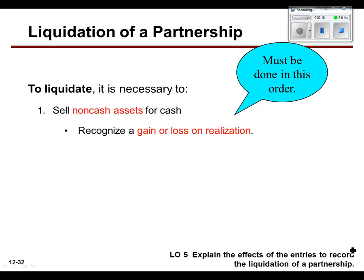First, you've got to get all of your non-cash assets into cash. You're going to sell all your extra inventory, sell all your equipment, maybe bargain with the insurance company to get some prepaid amounts back. You take all your non-cash assets and turn them into cash — you're liquidating them. The book calls it a gain or loss on realization. Circle the word 'realization' in your notes, because that's what it's called when you sell non-cash assets to get cash in a liquidating scenario.